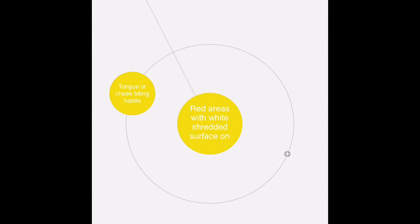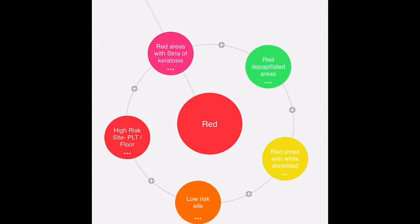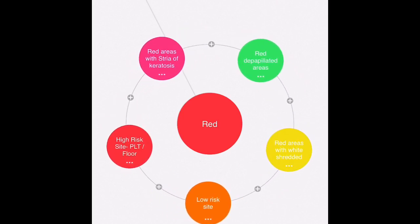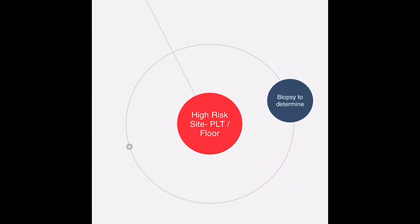If you come across a lesion that is red in color but you are unable to identify what kind of lesion it is, and you think it's in a high risk site like posterior lateral border of the tongue or floor of the mouth, then the immediate thing is to do a biopsy to determine the kind of lesion.